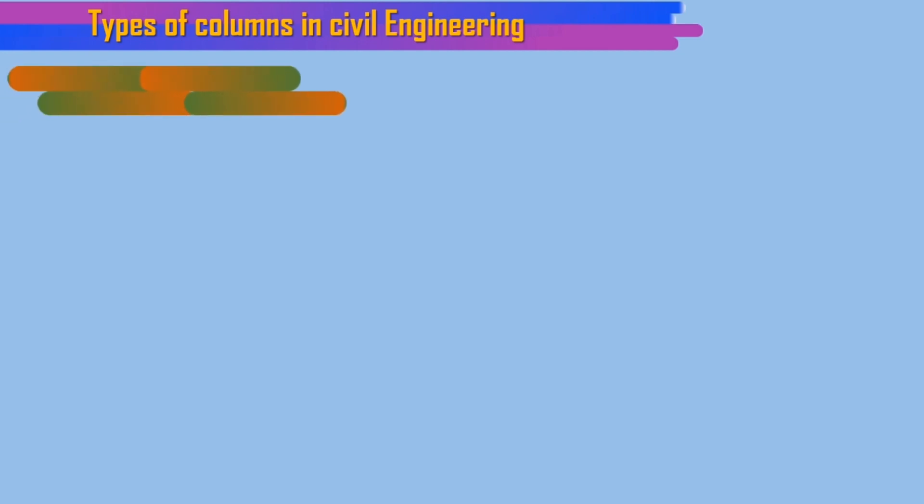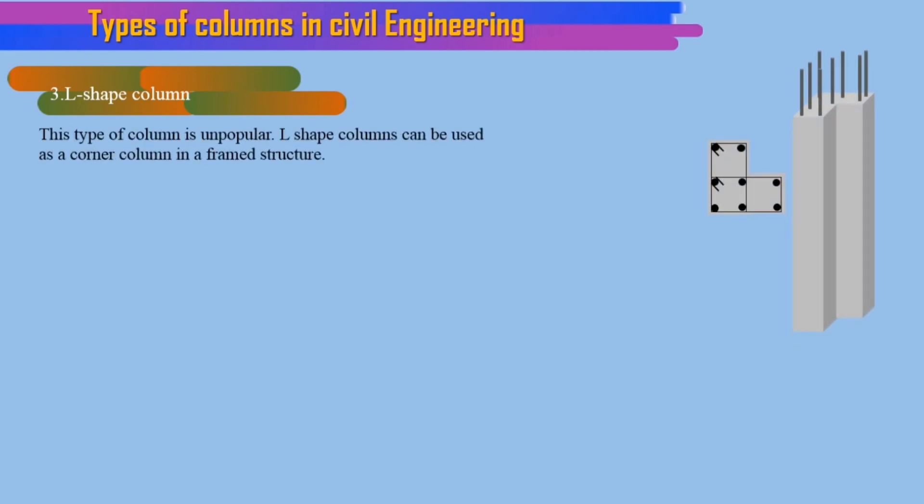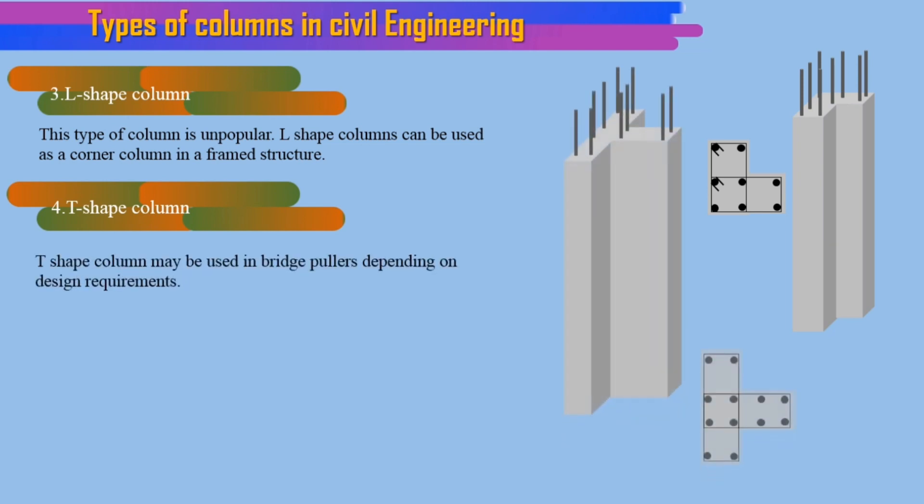3. L-shaped column. This type of column is unpopular. L-shaped columns can be used as a corner column in a framed structure. 4. T-shaped column. T-shaped column may be used in bridge pillars depending on design requirements.